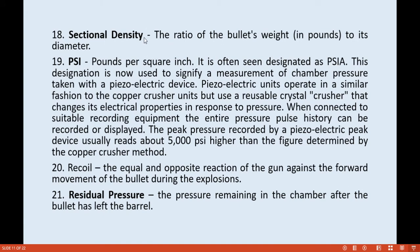Pressure is the outward push of gases from powder combustion against the cartridge case, chamber, and bore. Sectional density is the ratio of the bullet's weight in pounds to its diameter. PSI (pounds per square inch) is often used to designate a measurement of chamber pressure.